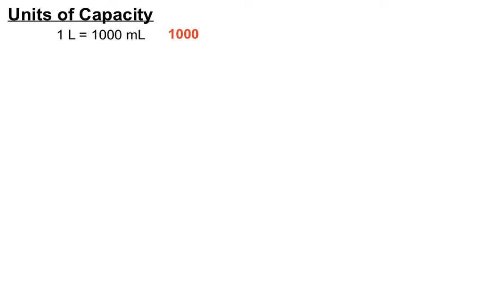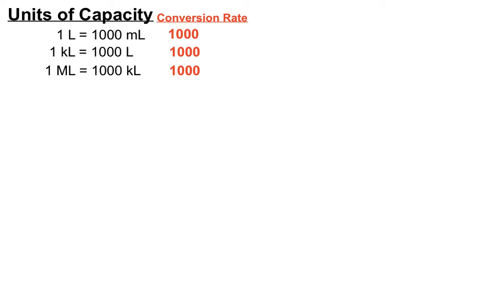Here are some capacity facts. One litre equals one thousand millilitres, so the conversion rate is a thousand — whether we multiply or divide by a thousand depends on which direction we're converting. When converting between kilolitres and litres, the conversion rate is also a thousand. And there are a thousand kilolitres in a megalitre, so the conversion rate is a thousand each time, which makes it straightforward.